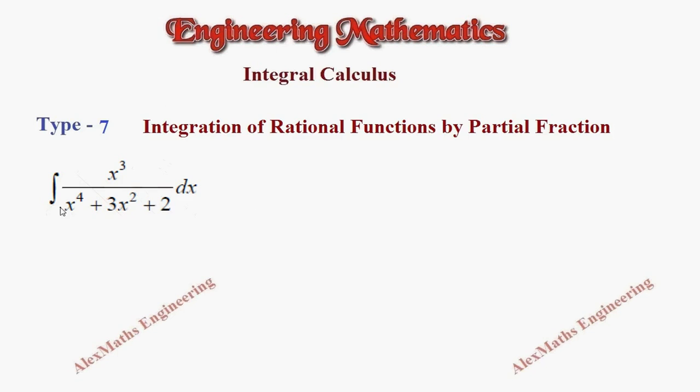So here in the denominator we notice x power 4 and x square. So we can give substitution. Let t equal to x square and dt will be 2x dx.